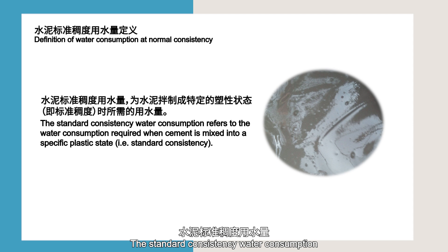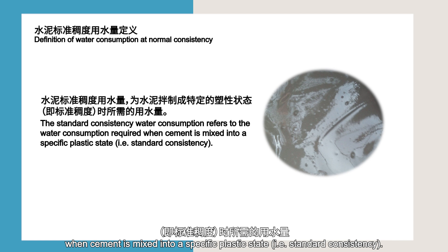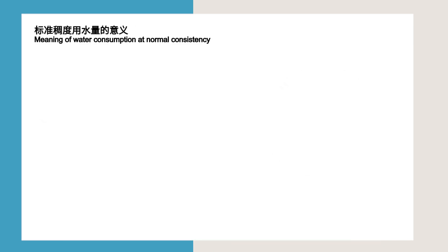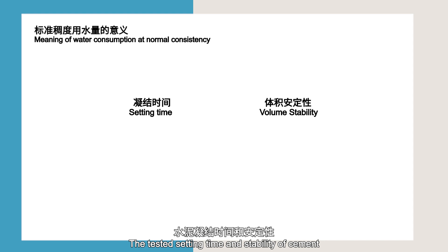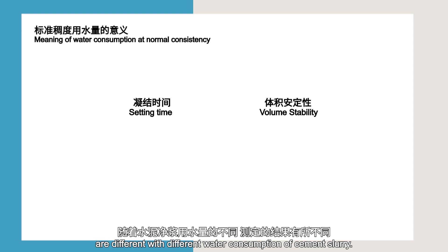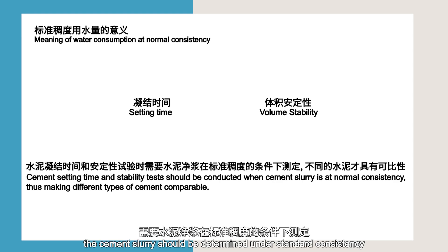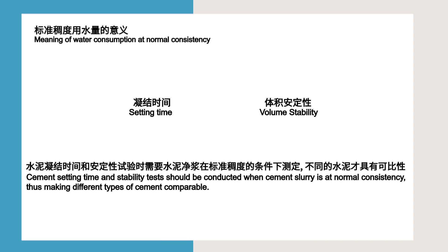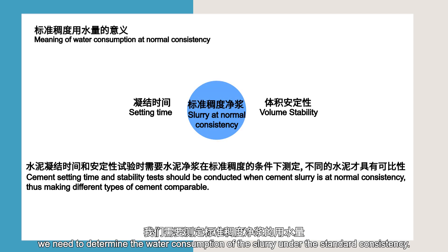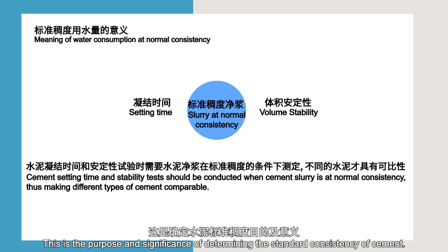The standard consistency water consumption refers to the water consumption required when cement is mixed into a specific plastic state — that is, standard consistency. The tested setting time and stability of cement are different with different water consumption of cement slurry. During the test, the cement slurry should be determined under standard consistency so that different cement can be comparable. Therefore, we need to determine the water consumption of the slurry under standard consistency. This is the purpose and significance of determining the standard consistency of cement.